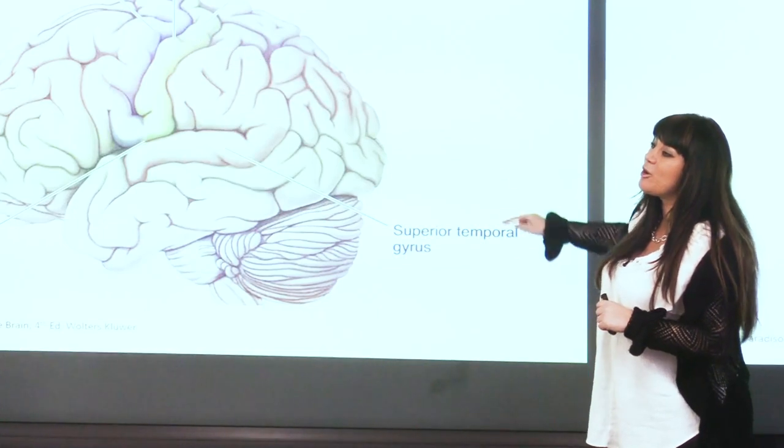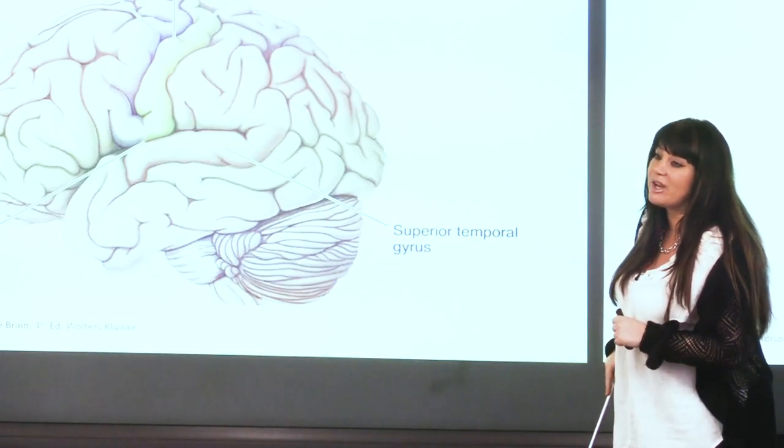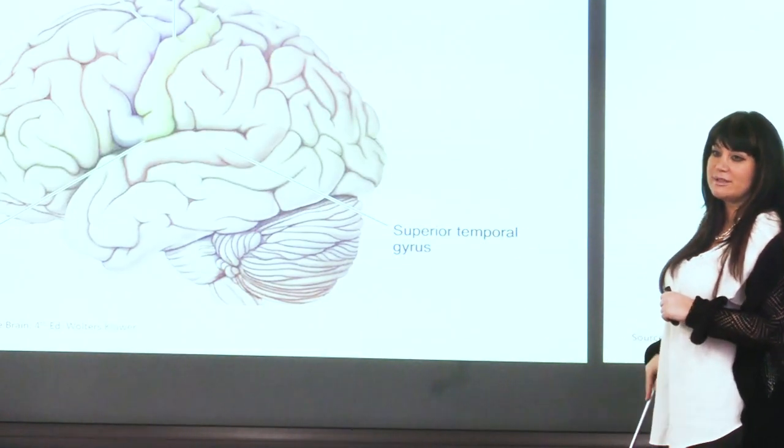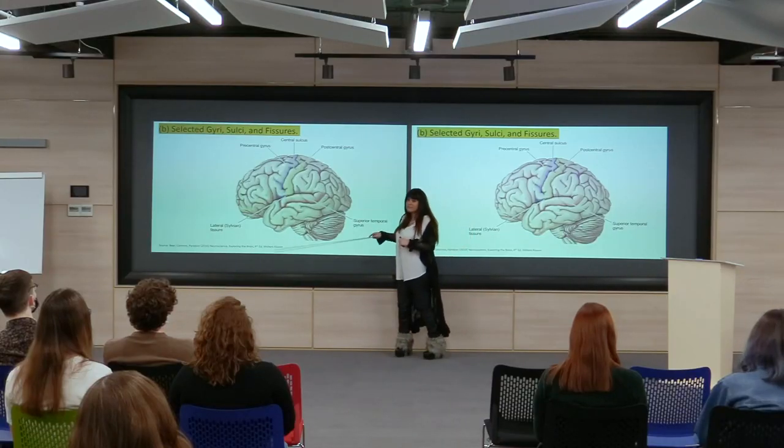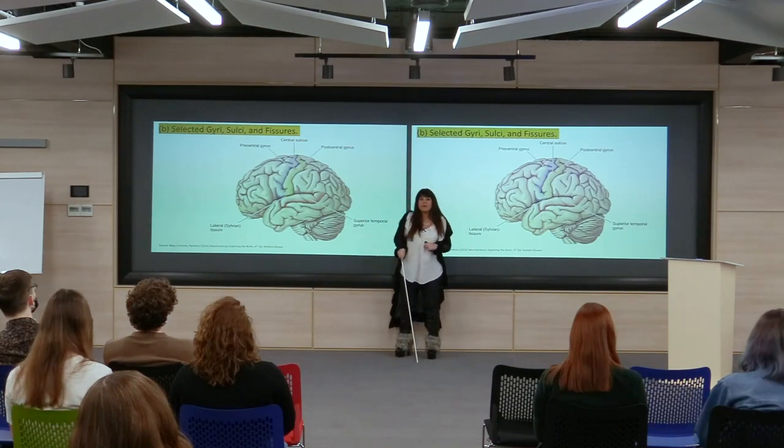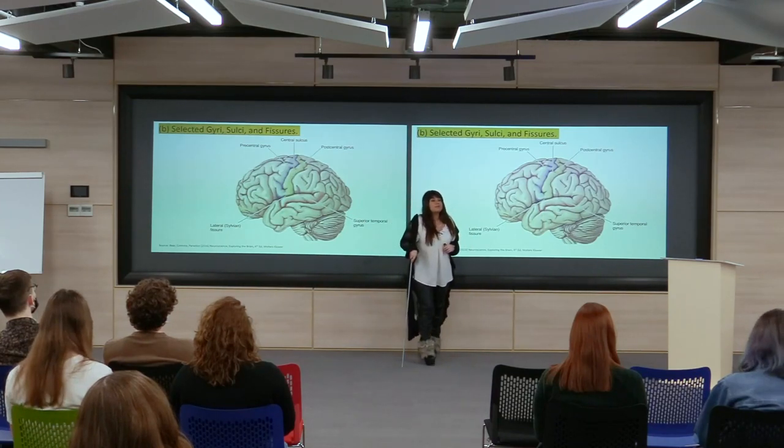All gyri and sulci have their names, but we won't learn each one individually. We should know a few key landmarks that mark the borders of different lobes. The central sulcus separates the frontal cortex from the parietal lobe. The first gyrus just anterior to the central sulcus is called the precentral gyrus, and the gyrus posterior to the central sulcus is called the postcentral gyrus.